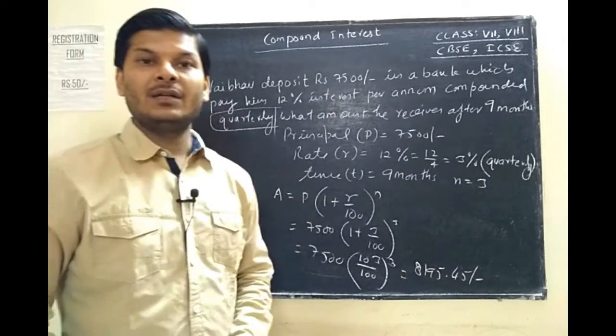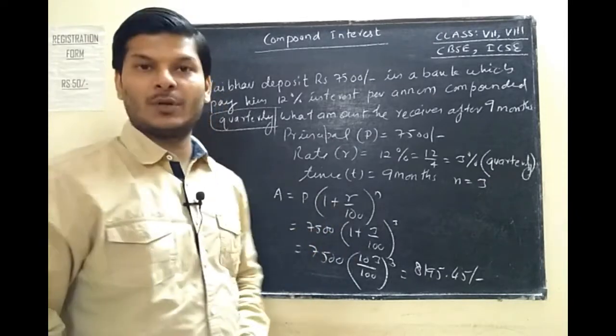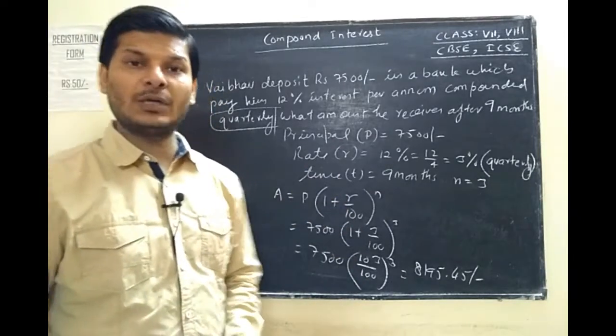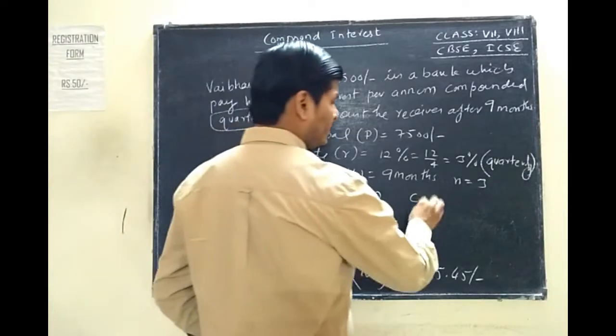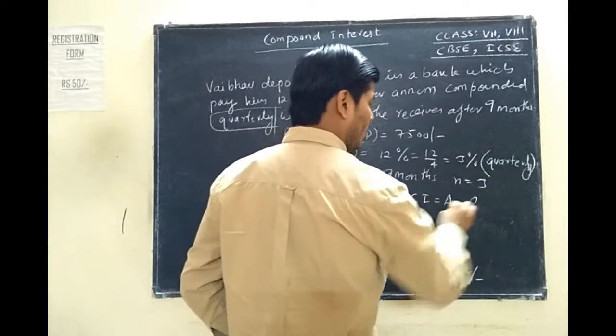The main concept of quarterly compounding should be clear. Now for compound interest, the formula is: Compound Interest = Amount minus Principal.